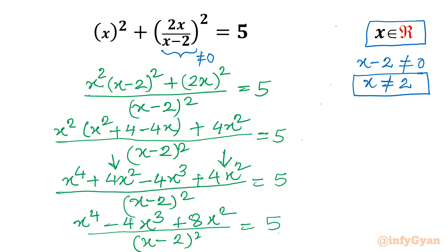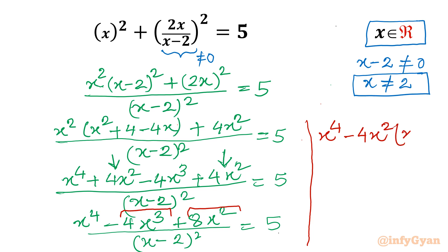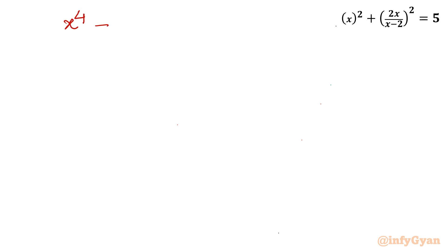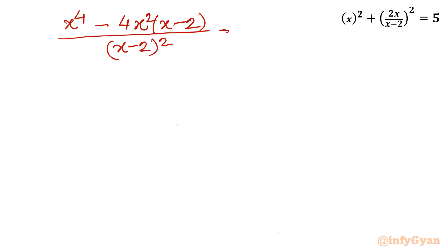From the second and third terms I will take 4x² common. Considering -4x³ + 8x², taking 4x² common gives 4x²(x - 2). So the numerator becomes x⁴ - 4x²(x - 2), and the denominator is (x - 2)², with the right hand side still 5. Now I will split the numerator: x⁴ - 4x²(x - 2) all over (x - 2)² equals 5.